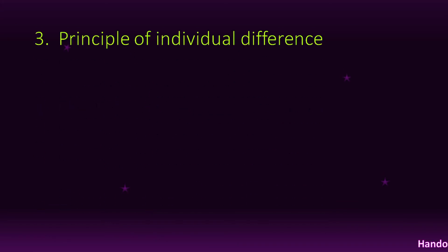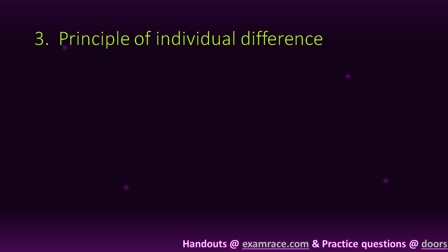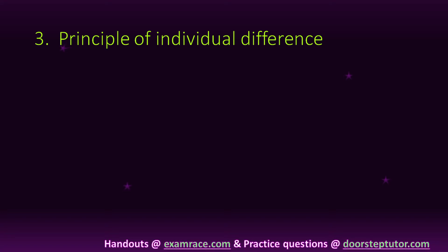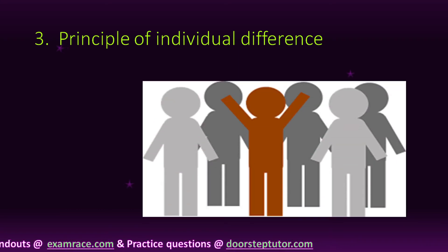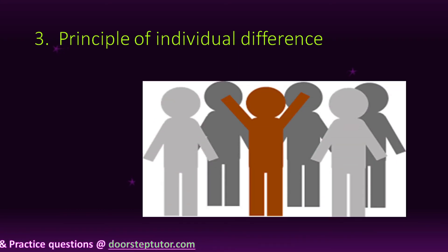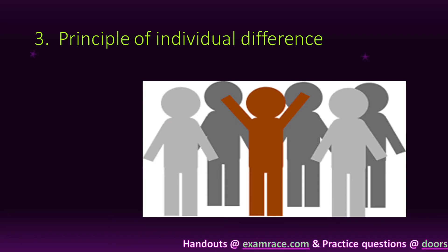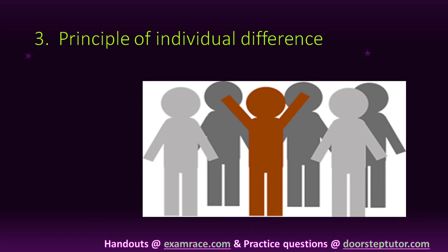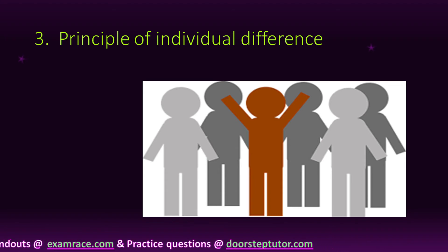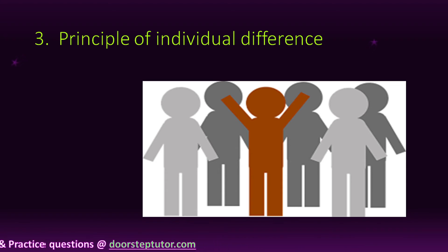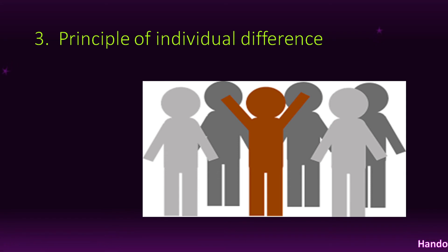The third principle is the principle of individual difference. Each and every child is different from each other — every child is unique in character. In a classroom, some children are talented, some are weak, some are gifted, and some are average. For example, some children walk at 10 months and some walk at 18 months.